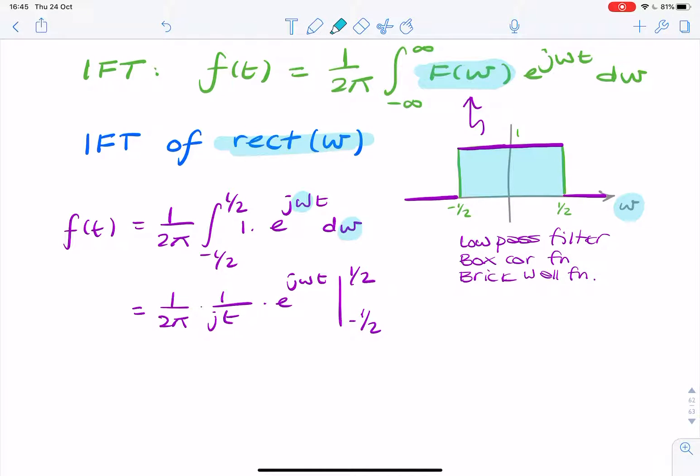Now we simply replace the limits, or substitute the limits. So it's 1 over 2πjt times e to the... So where am I replacing the limits? I'm replacing them instead of omega. So it'll be e to the jt/2 minus e to the minus jt/2.